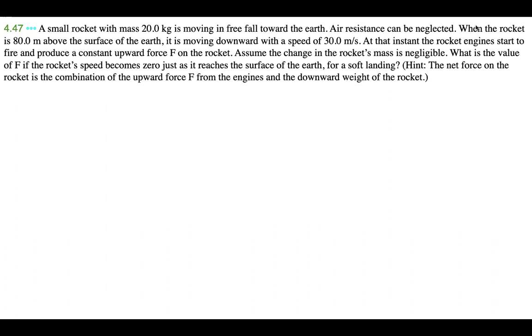A small rocket with mass 20.0 kilograms is moving in free fall toward the Earth. Air resistance can be neglected. When the rocket is 80.0 meters above the surface of the Earth, it is moving downward with a speed of 30.0 meters per second. At that instant, the rocket engines start to fire and produce a constant upward force F on the rocket. Assume the change in the rocket's mass is negligible. What is the value of F if the rocket's speed becomes zero just as it reaches the surface of the Earth for a soft landing? Hint: the net force on the rocket is a combination of the upward force F from the engines and the downward weight of the rocket.